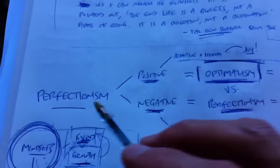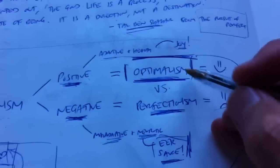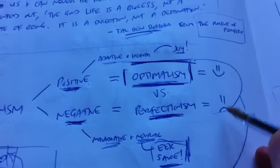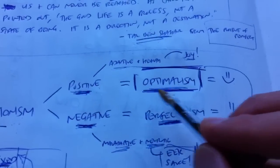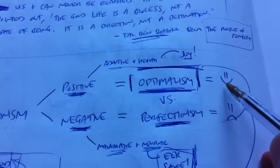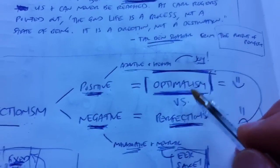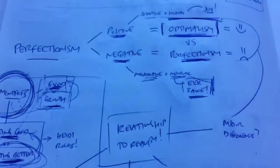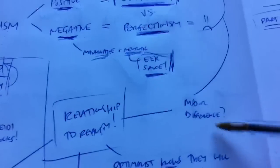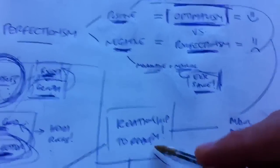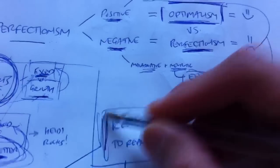Now he says they're so different, these types of perfectionism, that we should call them by two different names. The negative is our traditional perfectionism, sad face. The positive is optimalism, happy face. They're so different that perfectionism, optimalism, awesome. So what makes them different? What's the major difference between them? Tal tells us about a lot of differences, but the primary one is their relationship to reality.